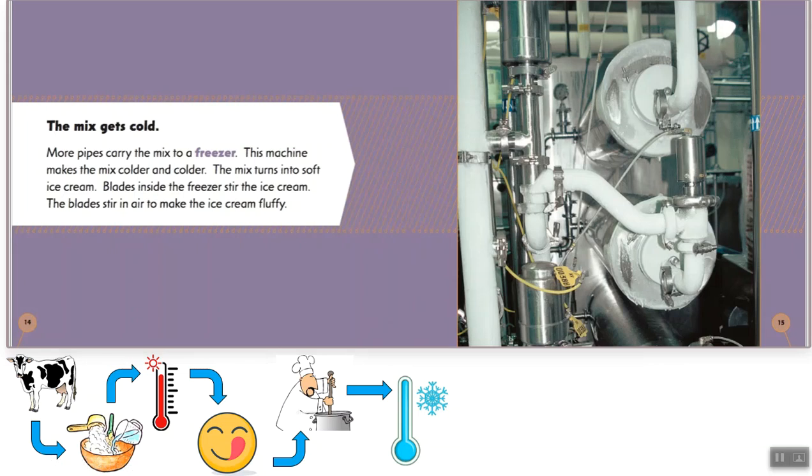The milk gets cold. More pipes carry the mix to a freezer. This machine makes the mix colder and colder. The mix turns into soft ice cream and blades inside the freezer stir the ice cream. The blades stir in air to make the ice cream fluffy. So we went from milk to adding sugar to heating up to adding delicious flavors to stirring the mix to cooling it down. You can really see how cool it is in the picture based on the ice forming on the pipes.